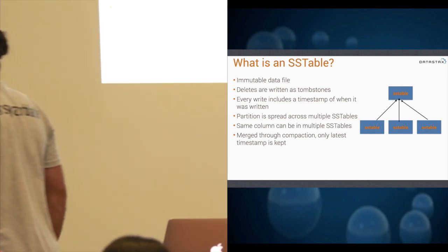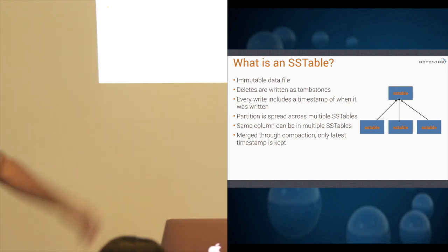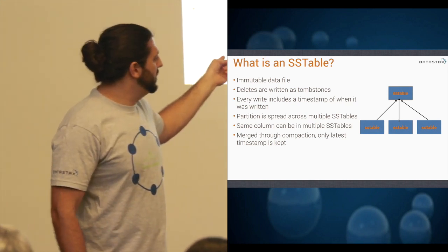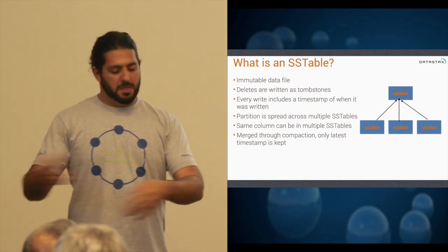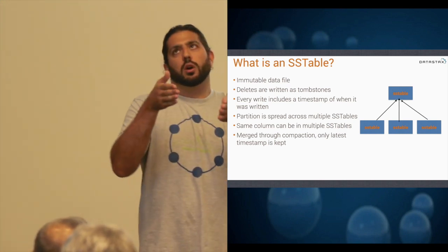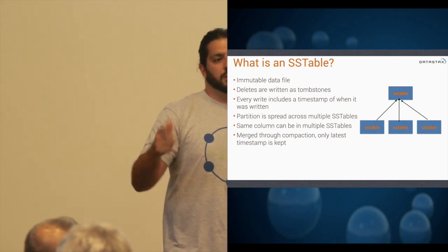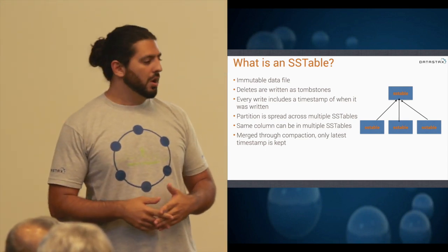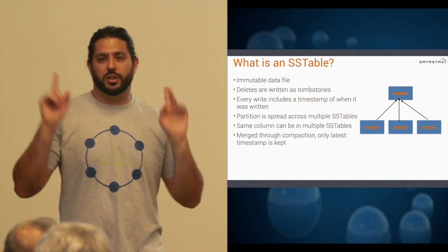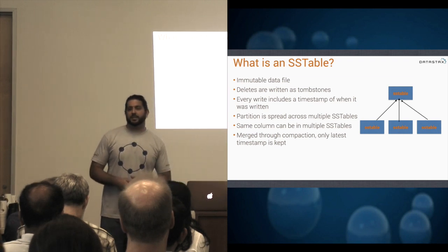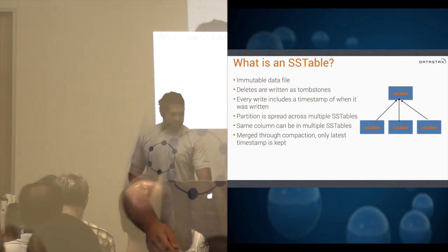One really cool thing about SS tables: you can actually back up the SS tables as they're written to disk, and that's a perfectly legitimate backup system. Because they're immutable, you literally just have to back up the files after they've been written. There's actually a nice utility that will back up all your SS tables to S3 automatically — you just turn it on and you get backups. If you write a 10 megabyte SS file, that's the only thing that needs to be backed up, even if you have a 50 terabyte cluster.